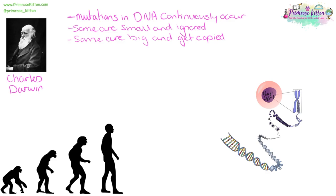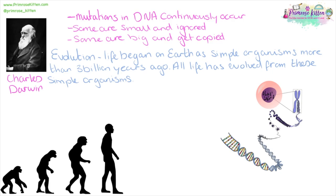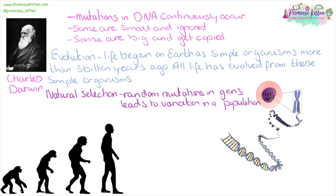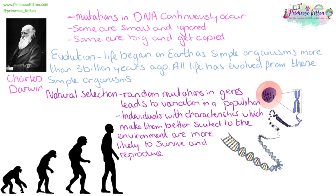Darwin's theory is that all life we know today has evolved over the past three billion years from the first life — very simple unicellular organisms. The way this evolution happens is by natural selection: random mutations in genes lead to natural variation in a population. That can be small things like different hair colour or eye colour, or bigger things like height. For giraffes, being tall is important because it gives them access to a larger range of food sources. Individuals with characteristics which make them better suited to the environment are more likely to survive and reproduce — whether tall giraffes, finches with different beaks, or moths that have gone black or white.